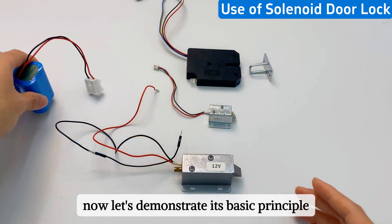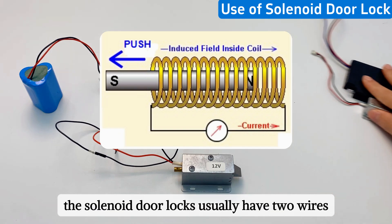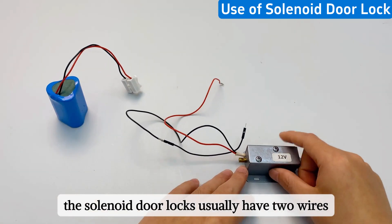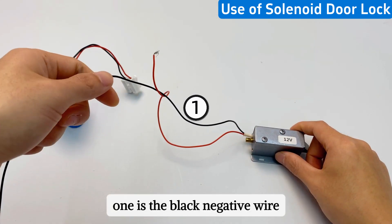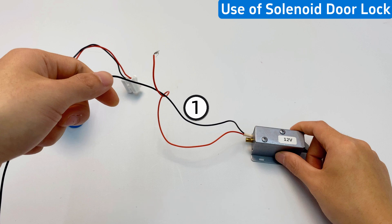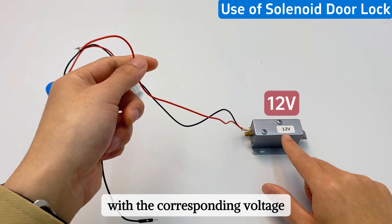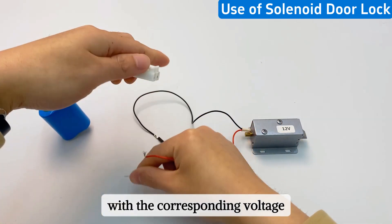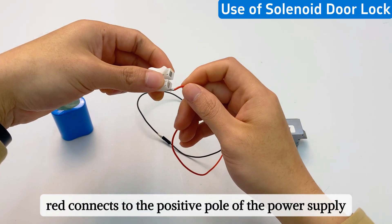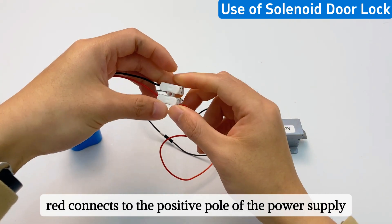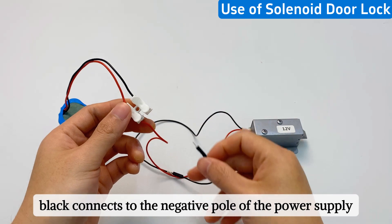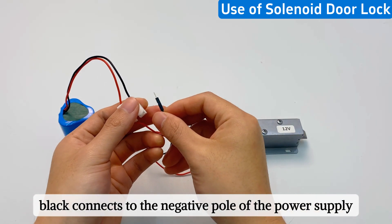Now let's demonstrate its basic principle. The solenoid door locks usually have two wires: one is the black negative wire, and the red positive wire. We can work by supplying it with the corresponding voltage. Red connects to the positive pole of the power supply, black connects to the negative pole of the power supply.